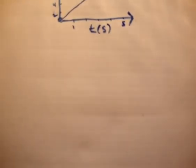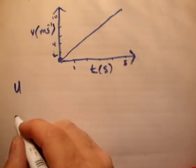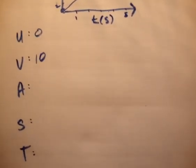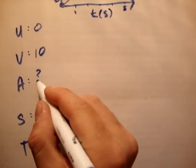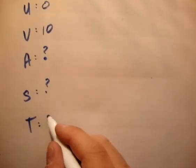We'll write down UVAST. The initial velocity is equal to 0 meters per second. The final velocity is equal to 10 meters per second. The acceleration, we don't know. The distance, we don't know. And the time, we know to be 5 seconds.